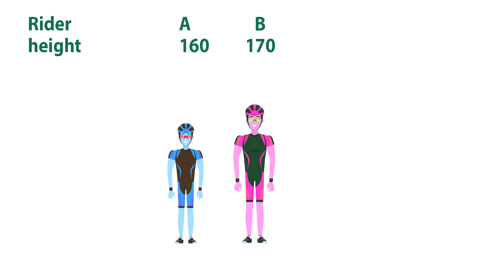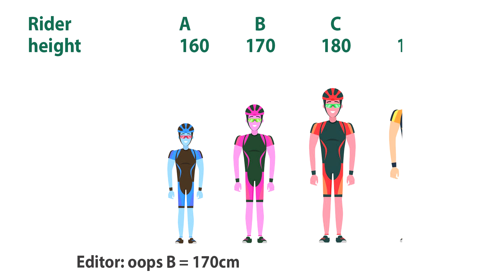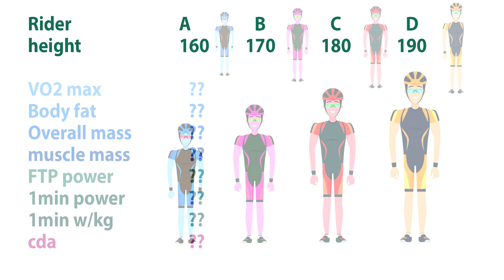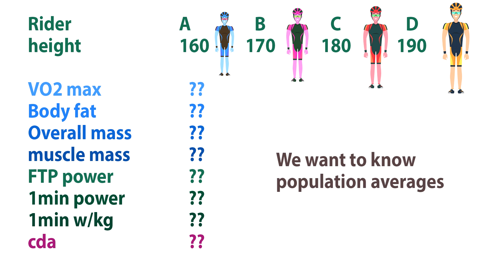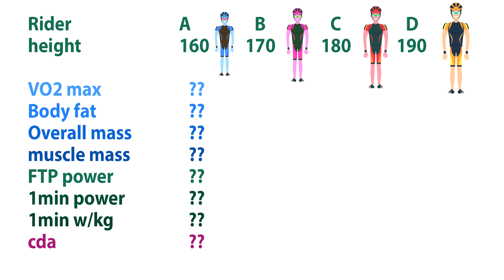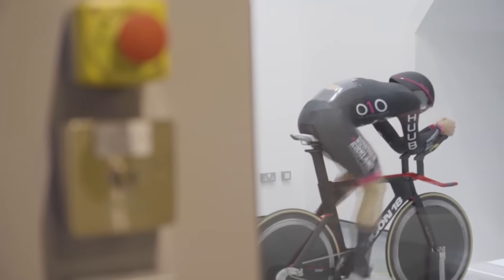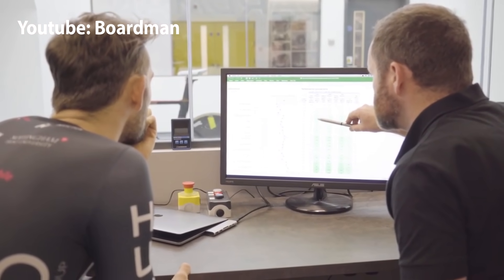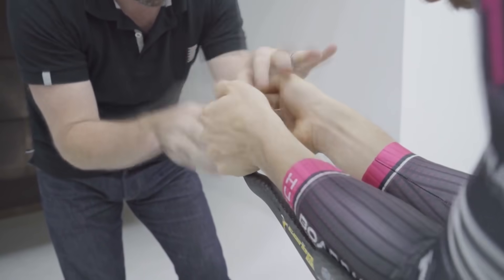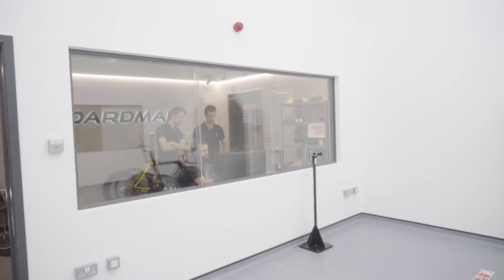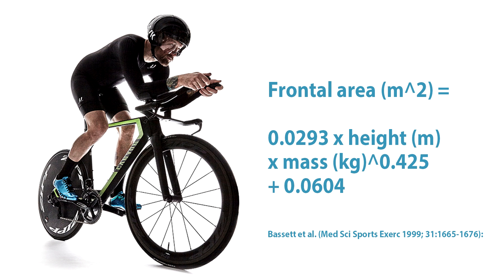Okay, so let's crack this code. We're going to start with a hypothetical rider A at 160 centimeters and rider B at 190 centimeters. We want to know their VO2 max, body fat, muscle mass, overall weight, and power. The first thing to look at is their CDA. Now, if we could put those riders in a wind tunnel we'd get the answer, or we could use a virtual wind tunnel on the road like the Aeropod. But we're modeling it here, so we need to do it hypothetically. Bassett 1999 already provided the formula: frontal area is a function of height times mass to the power of 0.425.